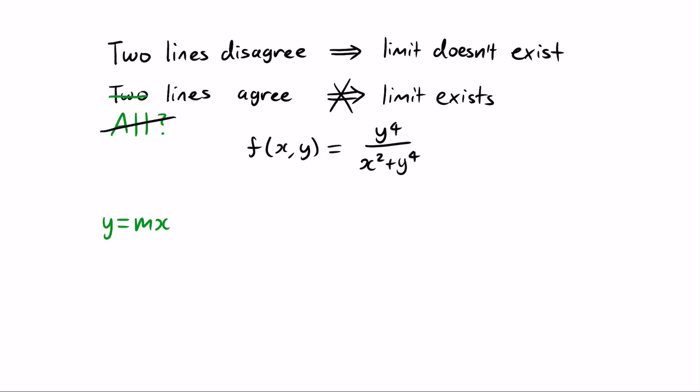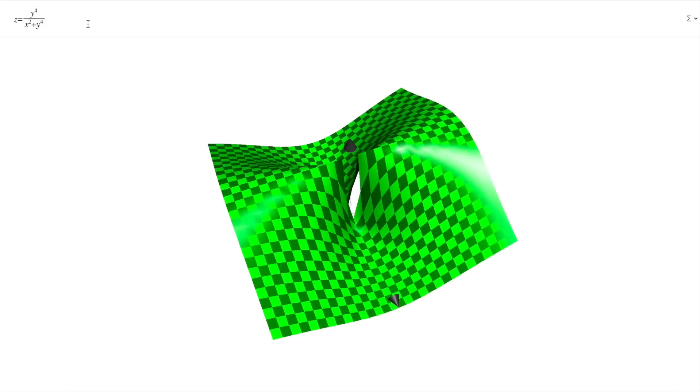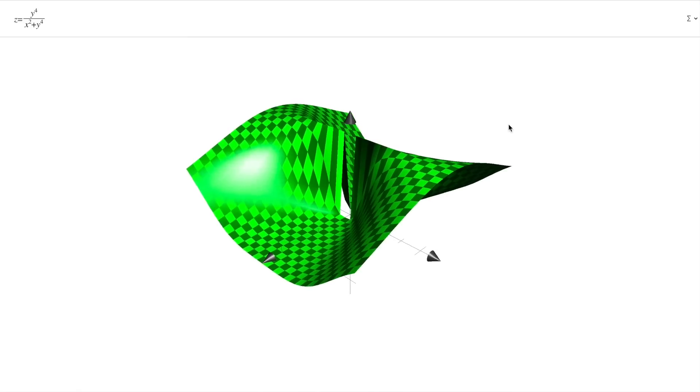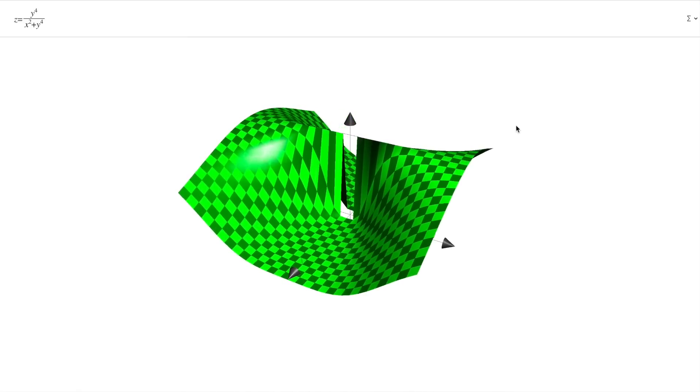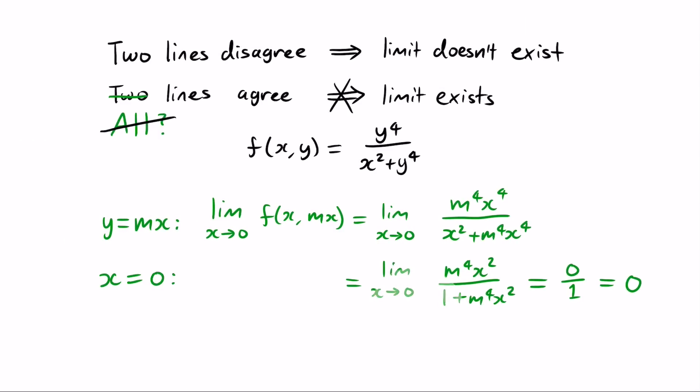Let's plug in y equals mx and take the limit as x approaches 0. We can cancel out some x's, and now the numerator approaches 0 while the denominator approaches 1, meaning this limit exists and equals 0. This works for every value of m, including m equals 0. So does the two variable limit exist? Well, if we take a look at the graph, we can see that no, it doesn't, and we can also see where we went wrong. There's one straight line through 0 that can't be written in the form y equals mx, and that's the line x equals 0, for which the slope is infinite. If we check this path, we get a different value.